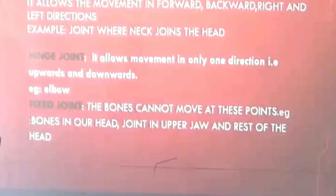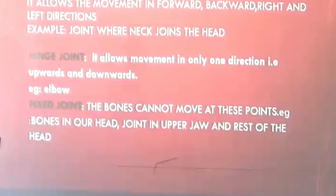We have another kind of joint, that is the hinge joint. It allows movement in only one direction — upward and downward. It is like the hinge in a door, as a door opens in and out. In the same way, we have the hinge joint in our elbow.